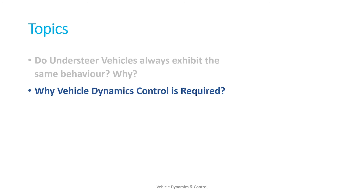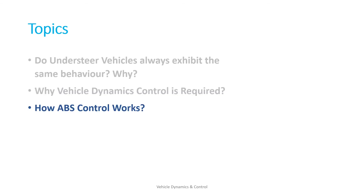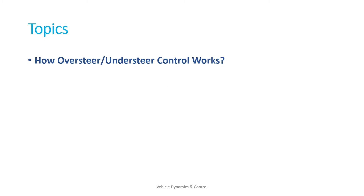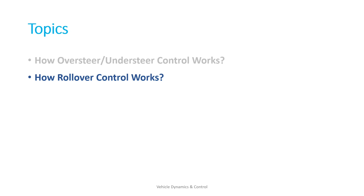And why vehicle dynamics control is required? Different use cases are considered to show why vehicle dynamics control is required for certain situations. How ABS control works is explained from a function point of view, not restricted just to valves and hydraulic circuits. How TCS control works is also explained from a function point of view, and the geometrical interpretation of fixed slip ratio is explained — this concept is particularly useful for benchmarking ABS and TCS performance studies. How oversteer and understeer control works is explained with intuitive animations, how rollover control works is explained in detail, and how torque vectoring works is explained with the concept of ideal torque vectoring.